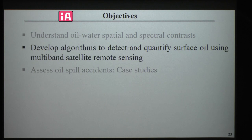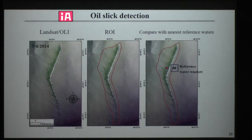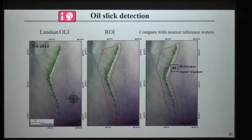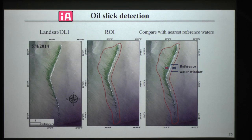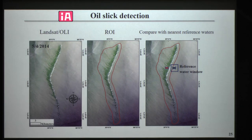After quantifying the sun glint threshold and studying oil-water spatial and spectral contrasts using field experiments, the next step is to use spatial and spectral contrast to develop algorithms to detect and quantify oil. To detect oil slick, every pixel in the region of interest is compared with the nearest reference water. If the pixel reflectance is different from the reference water, it will be identified as a spatial anomaly.